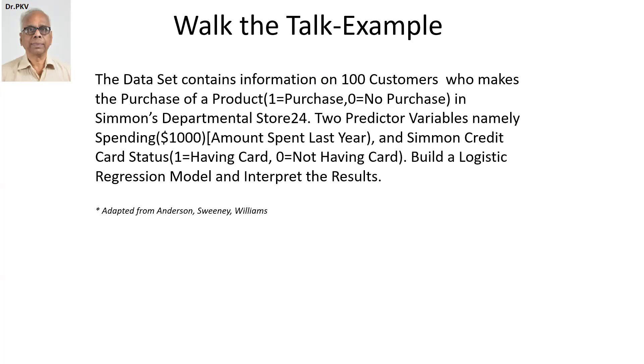and Simon credit card status, the second predictor variable. One equals having the card, zero equals not having the card. Build a logistic regression model and interpret the results. Data adapted from Anderson, Sweeney, Williams for discussion.